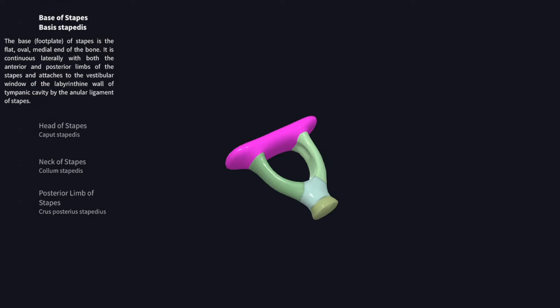Each of the ear ossicles is ossified usually from one center in the fourth month of intrauterine life. All the auditory ossicles assume adult size at birth.